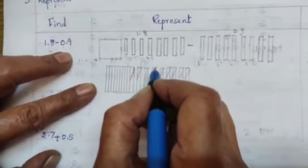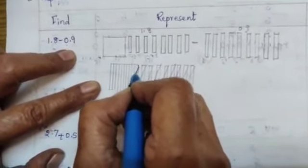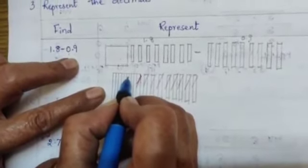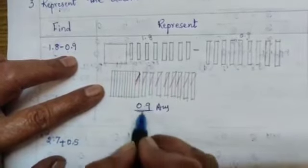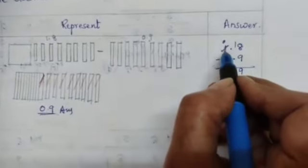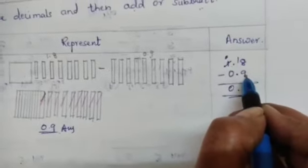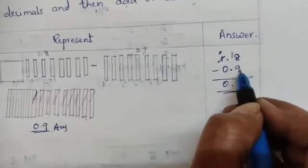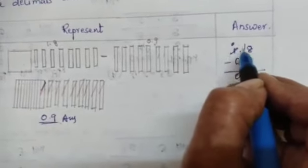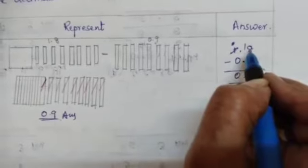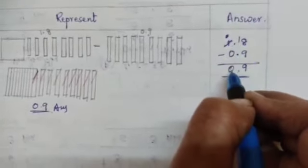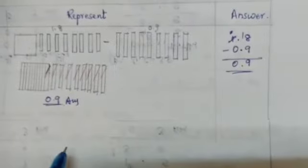1, 2, 3, 4, 5, 6, 7, 8, 9. So remaining is how much? 1, 2, 3, 4, 5, 6, 7, 8, 9. 0.9 is the answer. So answer you have to find 1.8 minus 0.9. 8 minus 9 you can't subtract. Take borrow from 1. Cut it and write it as 0, 9 becomes 18. 18 minus 9 is 9. 0 minus 0 is 0. 0.9 is the answer.